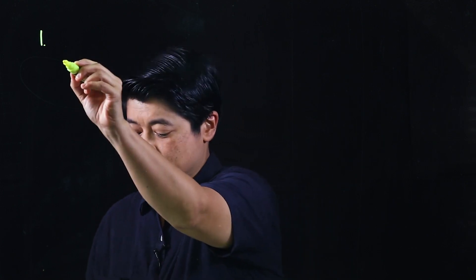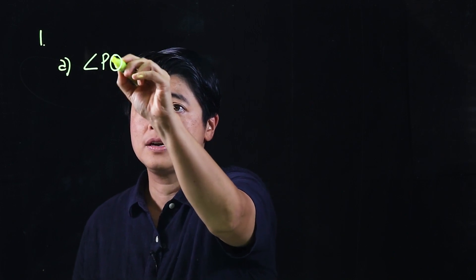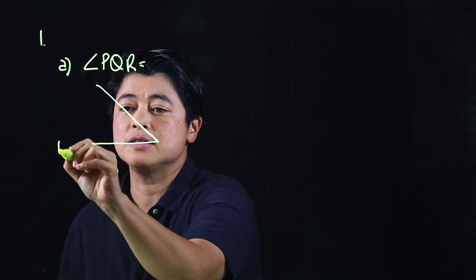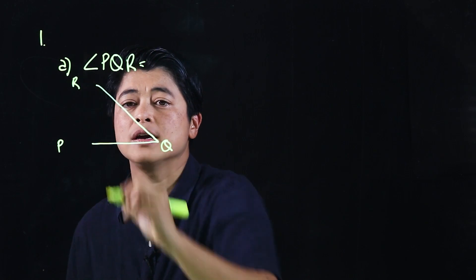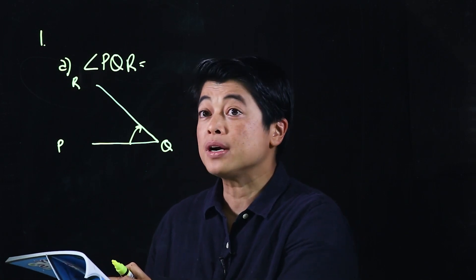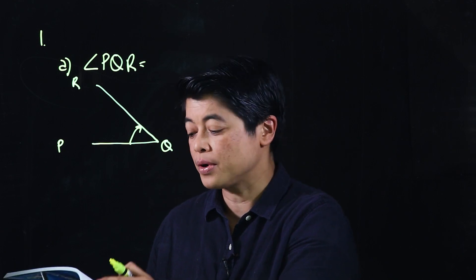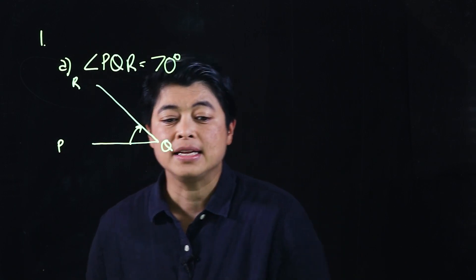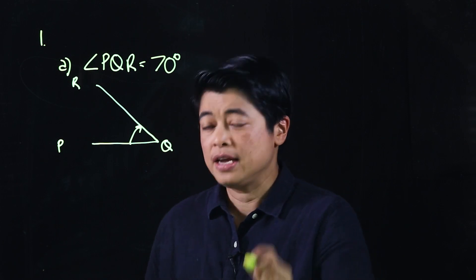The second example involves measuring angles from page 90. In letter A, it's angle PQR. Looking at the drawing, this is P, this is Q, and this is R. Reading from the left-hand side, the zero is on the top, so we read from the top. It goes from zero to 70, so the angle is 70 degrees.